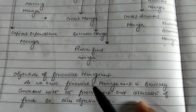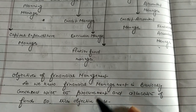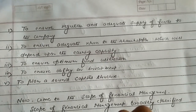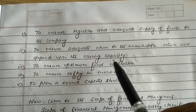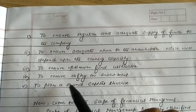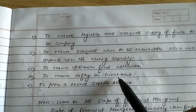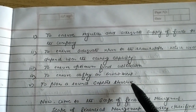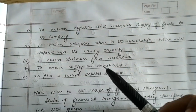Now come to the objectives of financial management. Financial management is basically associated with procurement and allocation of funds. The objectives include: to ensure regular and adequate supply of funds to the company; to ensure adequate returns to the shareholders, which depends on earning capacity; to ensure optimum fund utilization within the company; to ensure safety on investment; and to plan a sound capital structure.